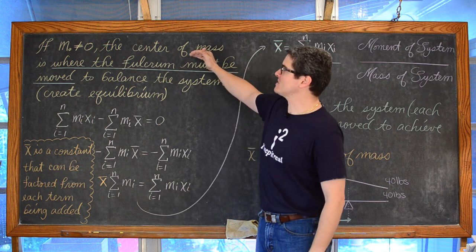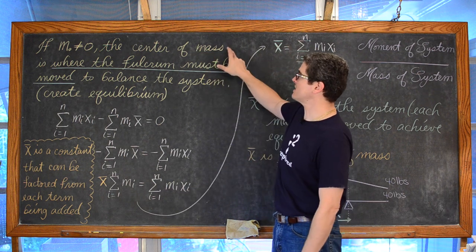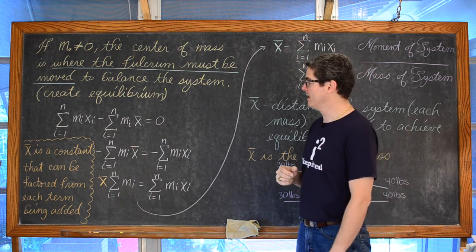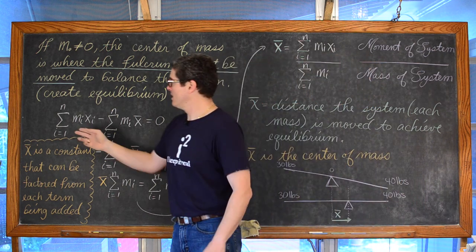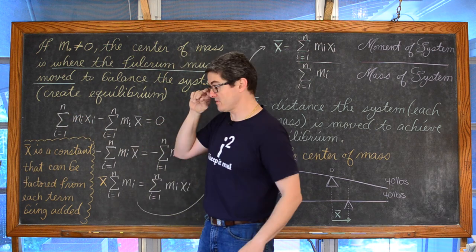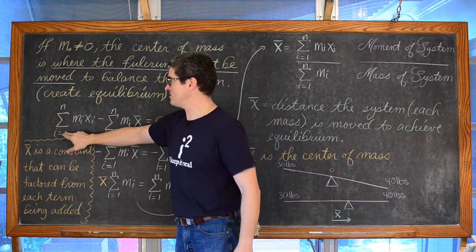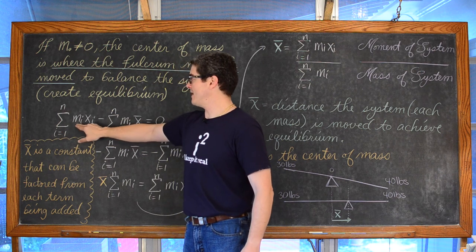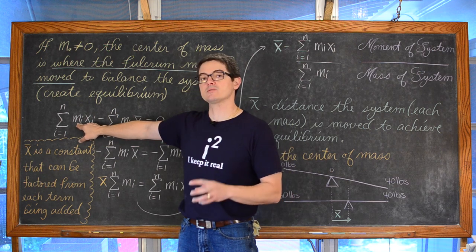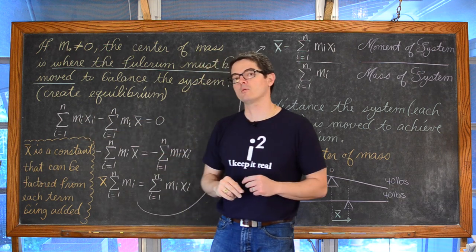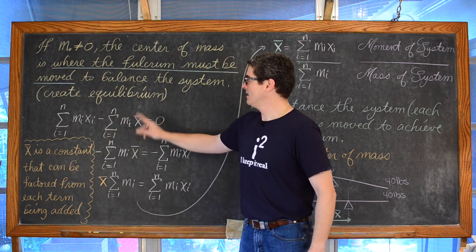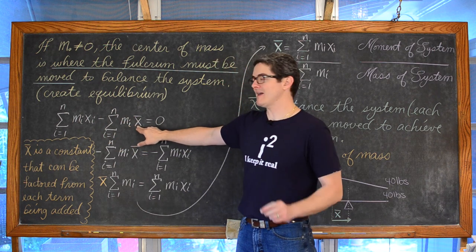If m sub 0 is not equal to 0, then the center of mass is where the fulcrum must be moved to balance the system, or to create equilibrium. And to show you where the formula comes from: in summation notation, the summation where i goes from 1 to n of m sub i times x sub i — just the product of all those individual point masses and how far they were away from the origin.